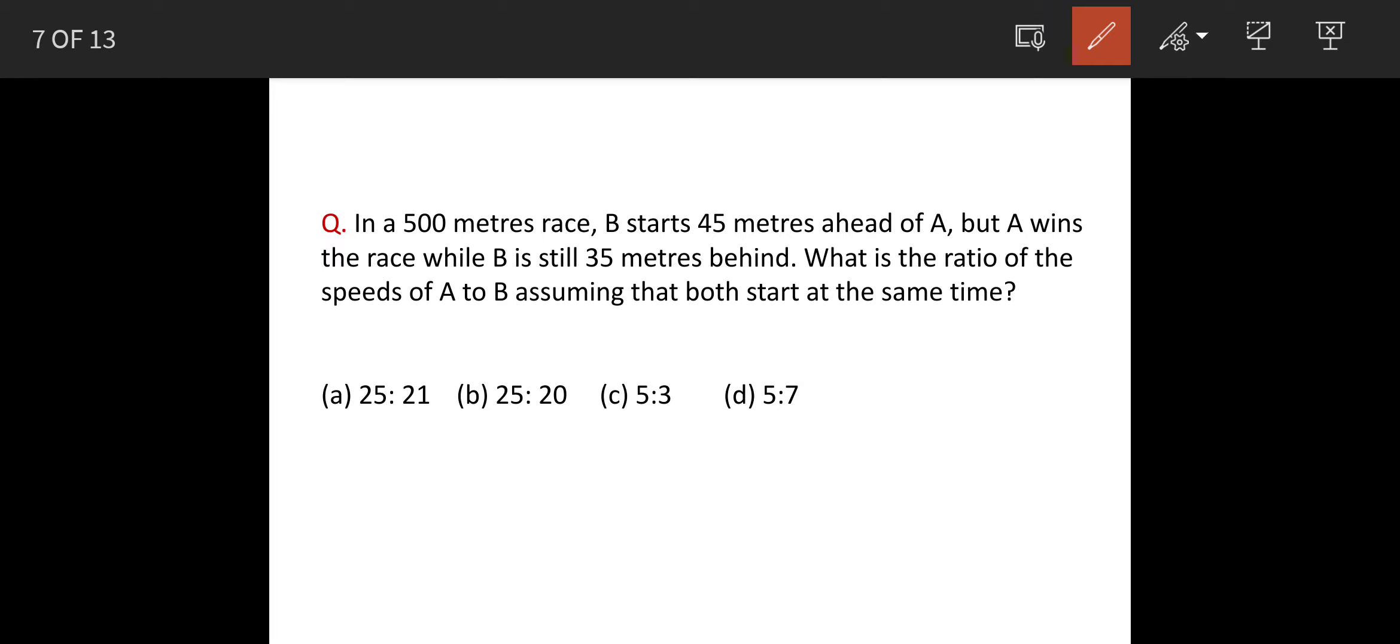In a 500 meter race, B starts 45 meters ahead of A. So let's say if this is total 500 meters, B is here and he is 45 meters ahead of A. This is total 500 meters.